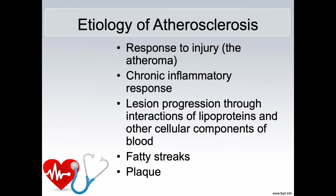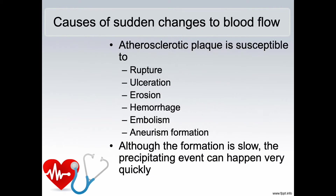Atherosclerosis progresses in the following way. Initially there is a response to an injury — that is the atheroma. This is followed by a chronic inflammatory response which leads to lesion progression through the interactions of lipoproteins and other cellular components of the blood. Soon fatty streaks begin to get deposited, and on top of that plaque formation occurs. All of these together slowly close the diameter, that is the lumina, of the blood vessel. Although the buildup of plaque is very slow and occurs over months and years, there can be sudden changes to blood flow.